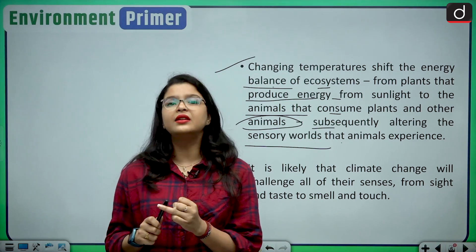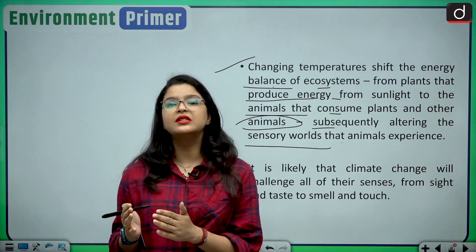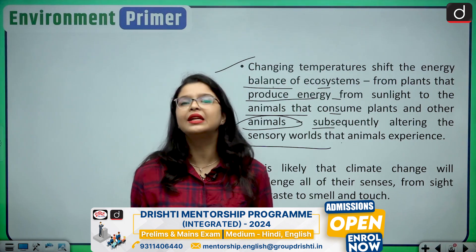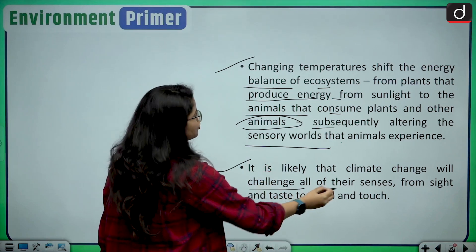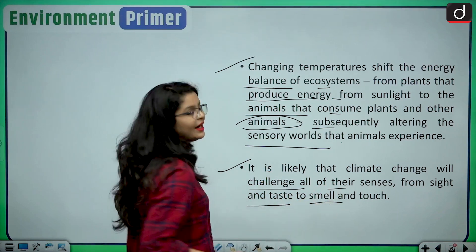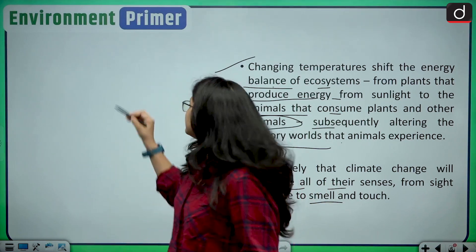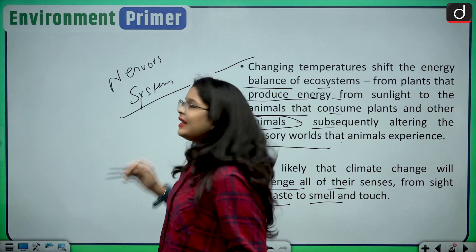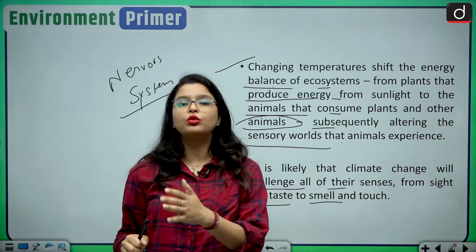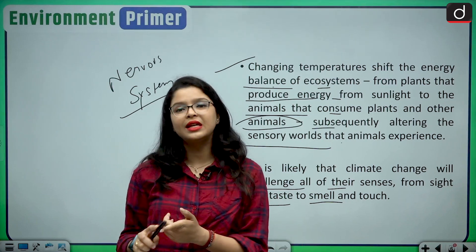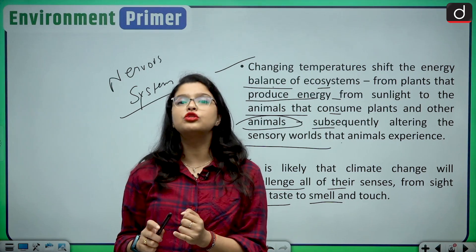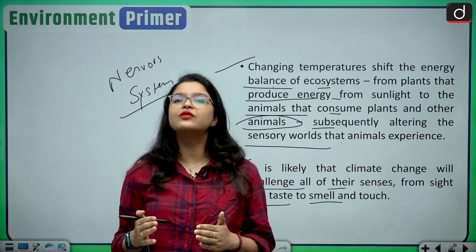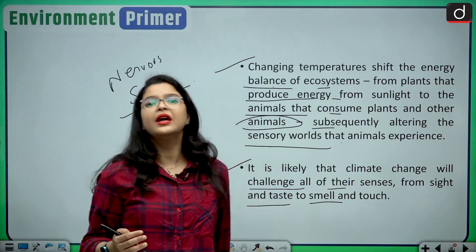Due to rising temperatures and other climatic events, food chains are becoming completely altered, which is very damaging to native species. It is likely that climate change will challenge all of their senses — from sight and taste to smell and touch. Impacts on their nervous system mean they are unable to read environmental cues, losing their ability to find food, reproduce, and maintain habitat.